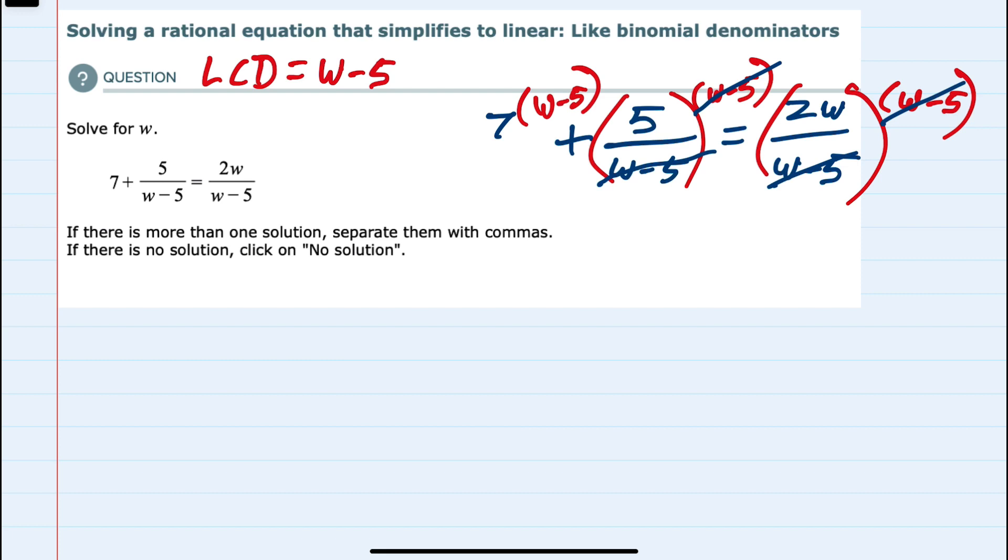So moving left to right, we now have 7 times w minus 5. I'm going to go ahead and distribute that 7. 7 times w is 7w. 7 times minus 5 is minus 35.